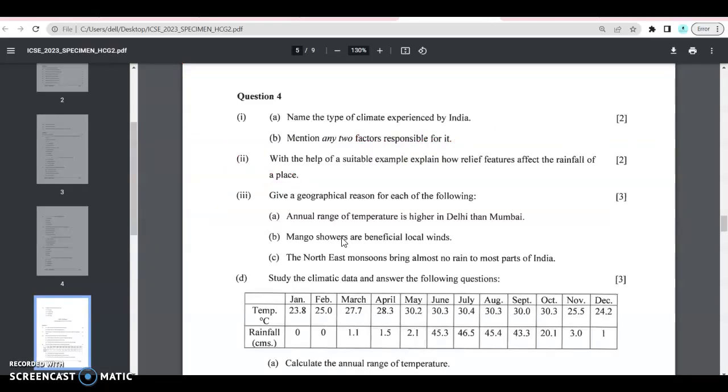Then for climate, we have reasoning questions: Why is the annual range of temperature higher in Delhi than Mumbai? You'll have to tell about the winds that flow, okay, and what are the beneficial local winds, the mango showers, why are they beneficial? Northeast monsoon brings almost no rain to most parts of India. So you will have to give a valid reason for this.